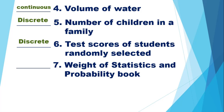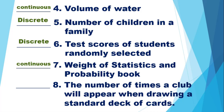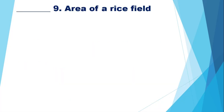For number 7, weight of the Statistics and Probability book — how do we measure weight? In kilograms or grams, using a unit of measurement. So that is a continuous variable. For number 8, the number of times a club will appear when drawing from a standard deck of cards — club is one of the suits, along with heart, spade, and diamond. The number of times can be counted, so it's a discrete variable.